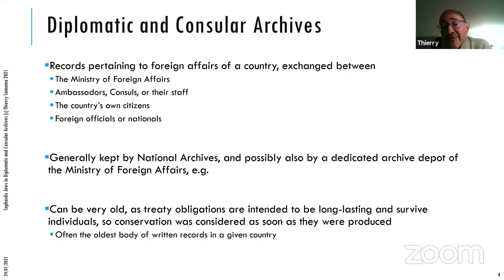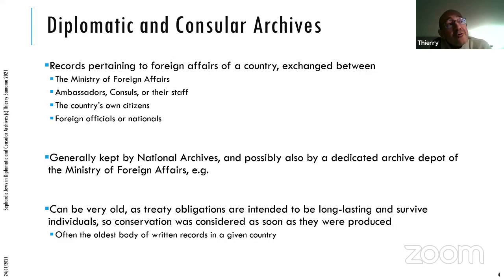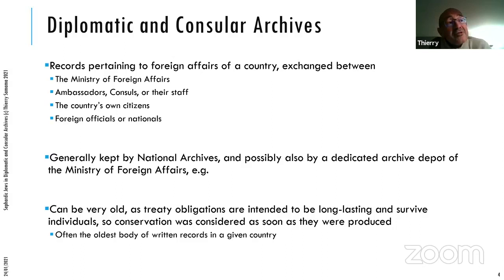In the UK, the National Archives hold diplomatic records. In the Netherlands, the National Archives in The Hague hold diplomatic records. In France, we have a dedicated archive depot for diplomatic archives called Archives Diplomatiques, with two sites — one in La Courneuve near Paris, and one in Nantes. In Italy, there is the Archivio Storico Diplomatico in Rome, which is the archives of the Ministry of Foreign Affairs. But Italy is a fairly recent country, so the diplomatic archives of its precursor states are very often held in provincial archives.